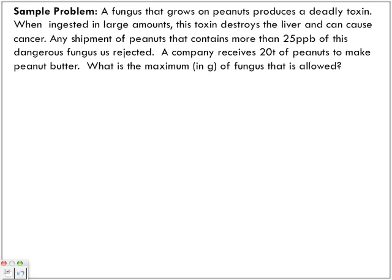Sample problem: A fungus that grows on peanuts produces a deadly toxin. When ingested in large amounts, this toxin destroys the liver and can cause cancer. Any shipment of peanuts that contains more than 25 parts per billion of this dangerous fungus is rejected. A company receives 20 tons of peanuts to make peanut butter.